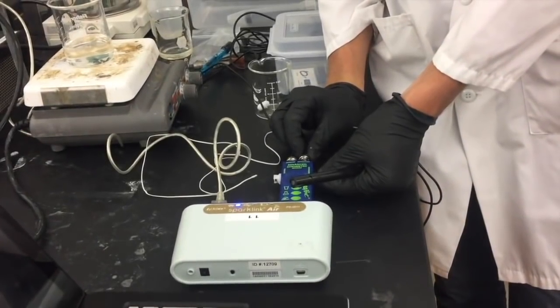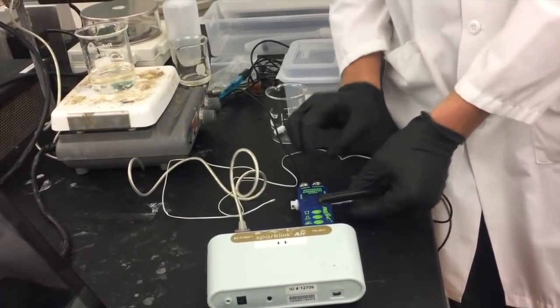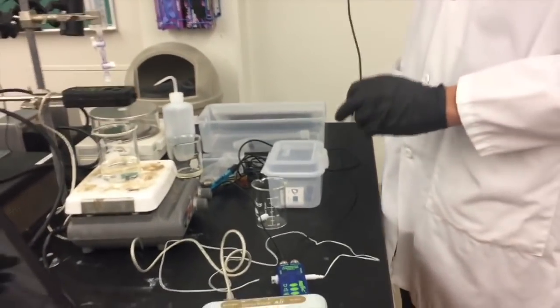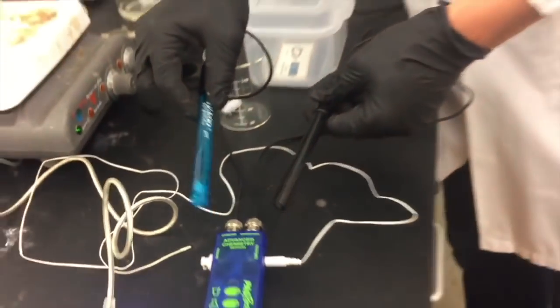Finally you'll need the conductivity meter that should be soaking. You'll also plug this into the advanced chemistry sensor. Make sure you double check that the pH meter and the conductivity meters are attached to the correct ports and they haven't been switched on accident.